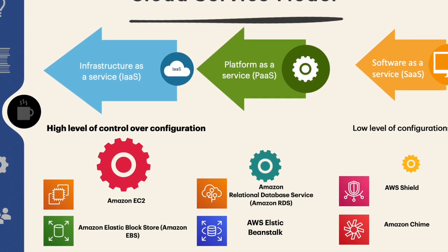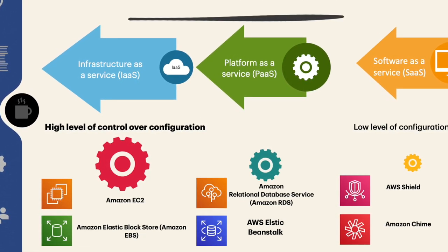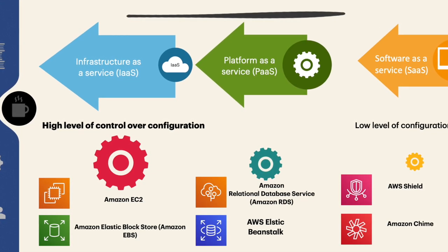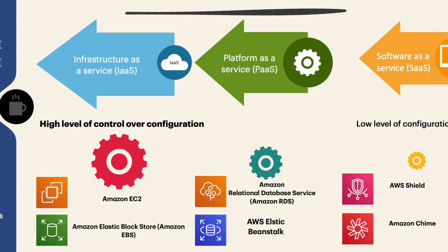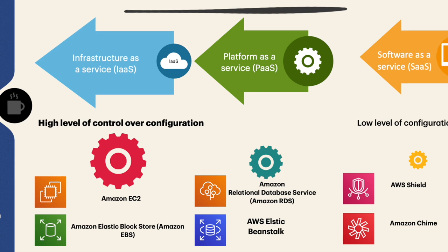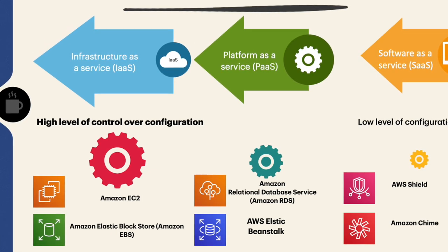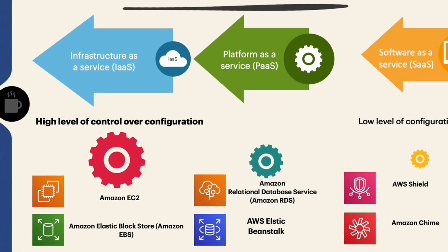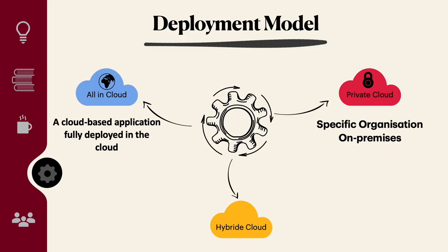IaaS is the most similar to existing IT resources that many IT departments use today. A good example is Amazon EC2, where you can configure the operating system, number of CPUs, and RAM. There are three main cloud deployment models. The first is 'All in the Cloud,' meaning everything is fully deployed in the cloud with nothing left in an on-premises data center.